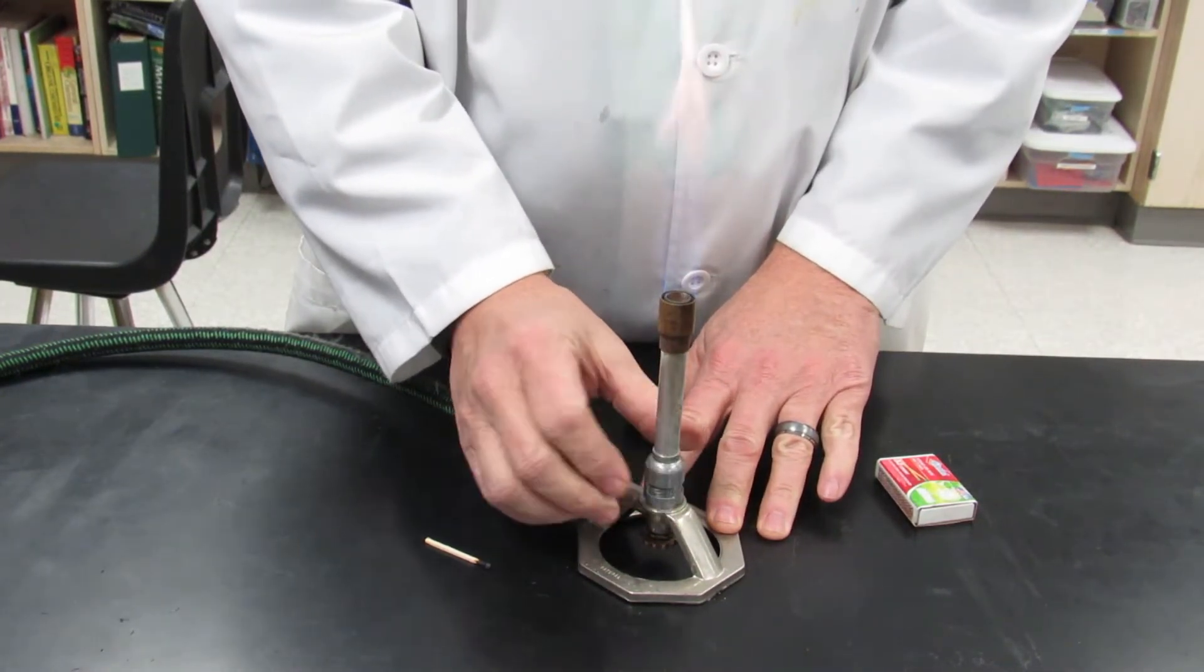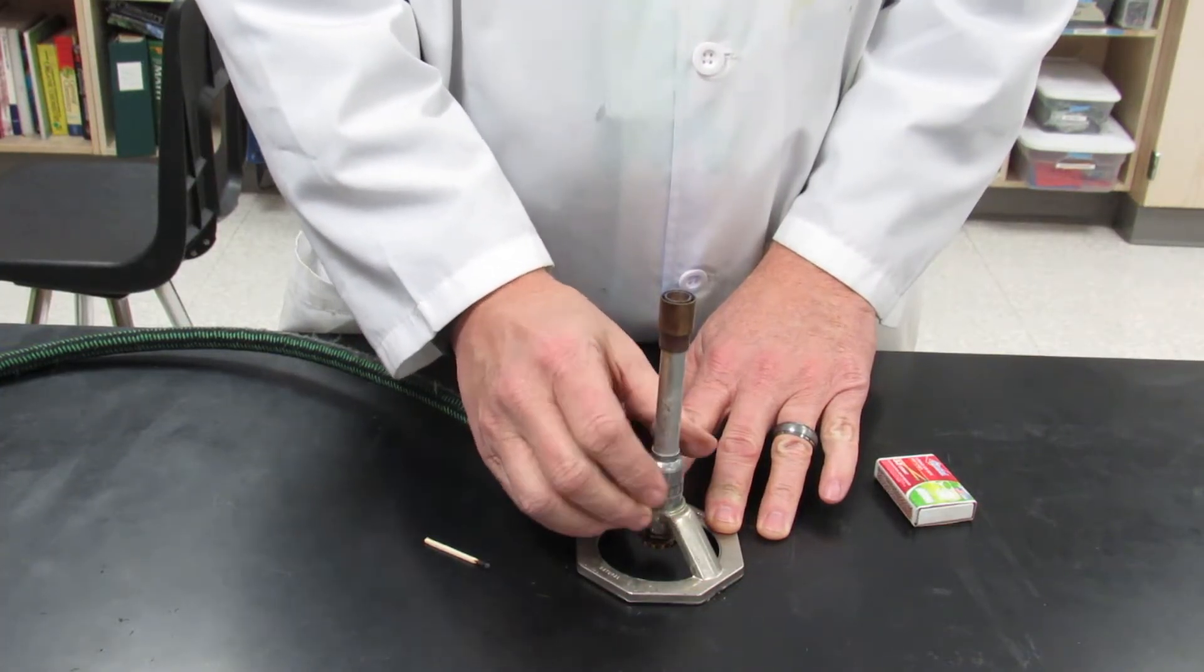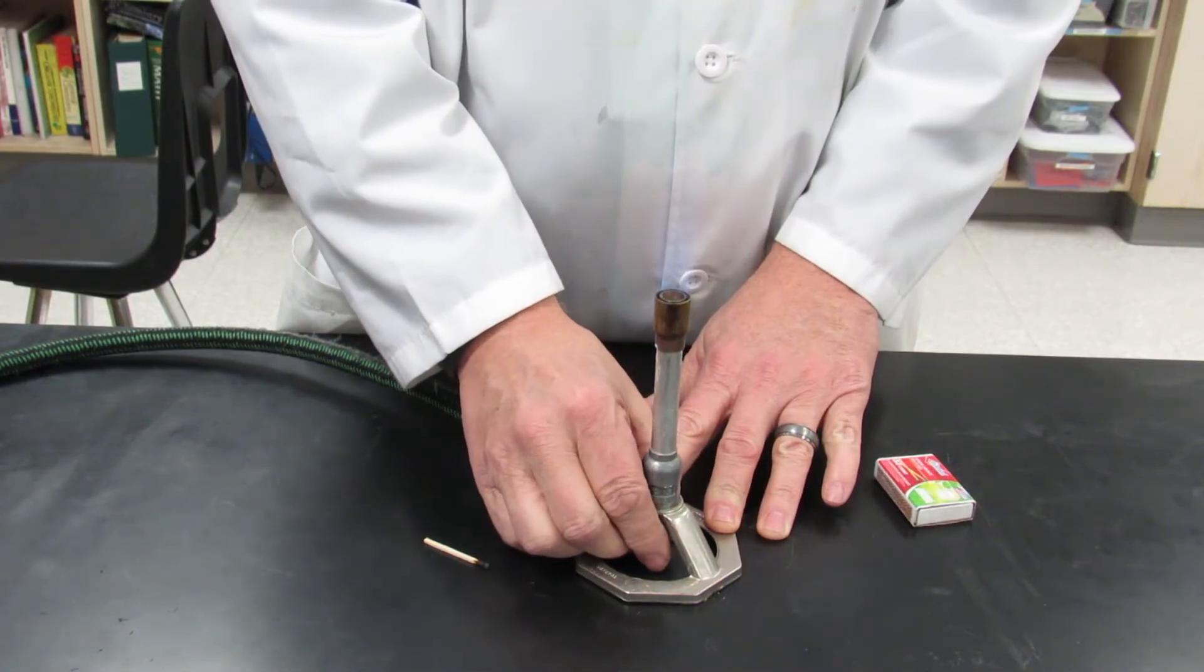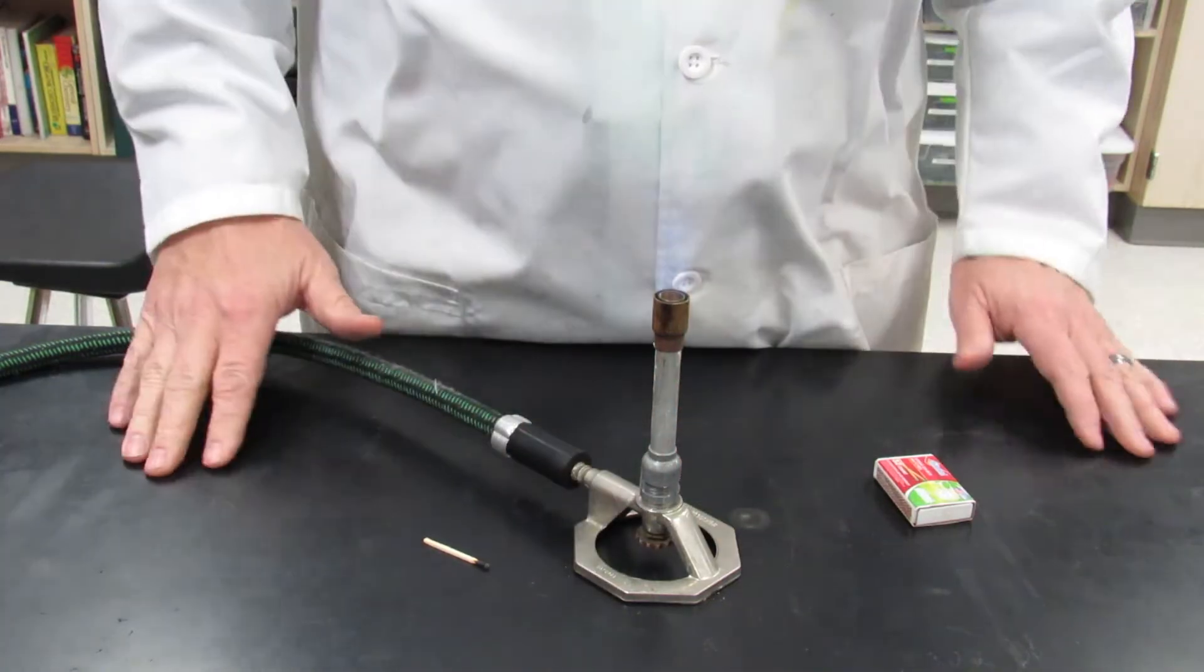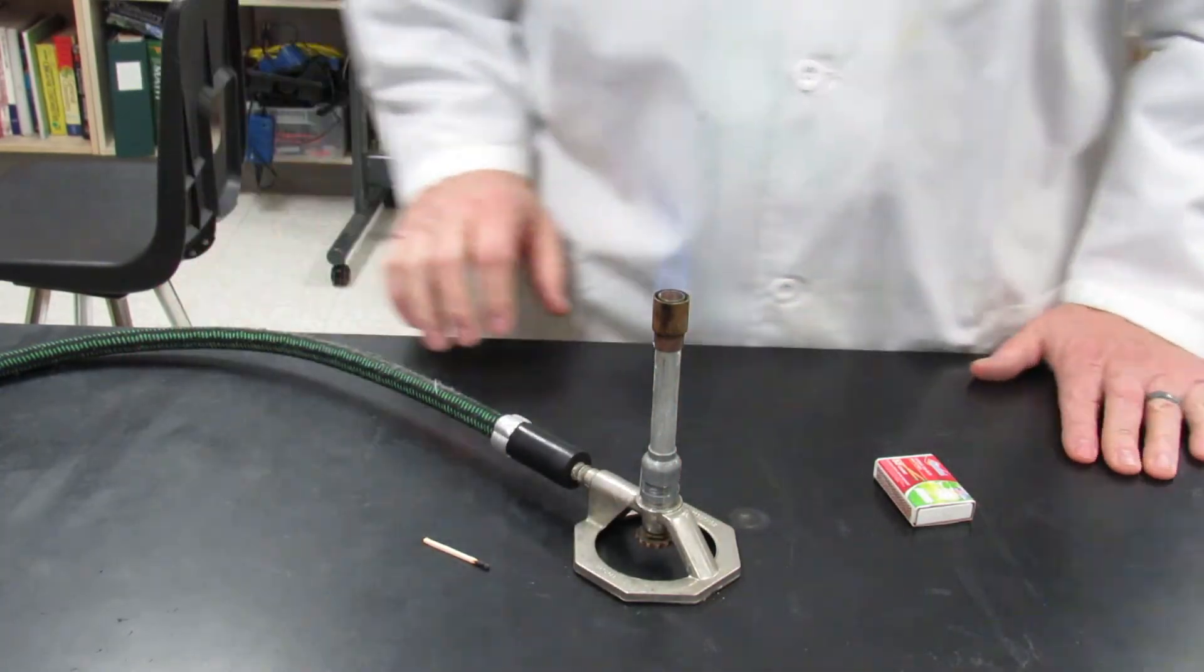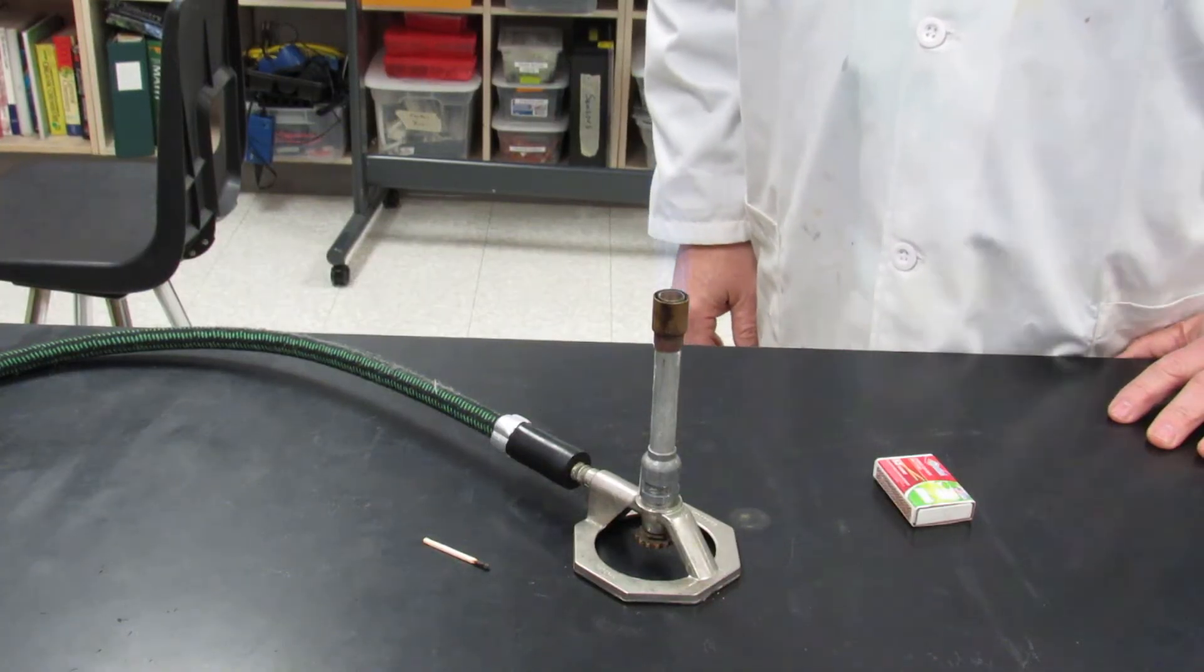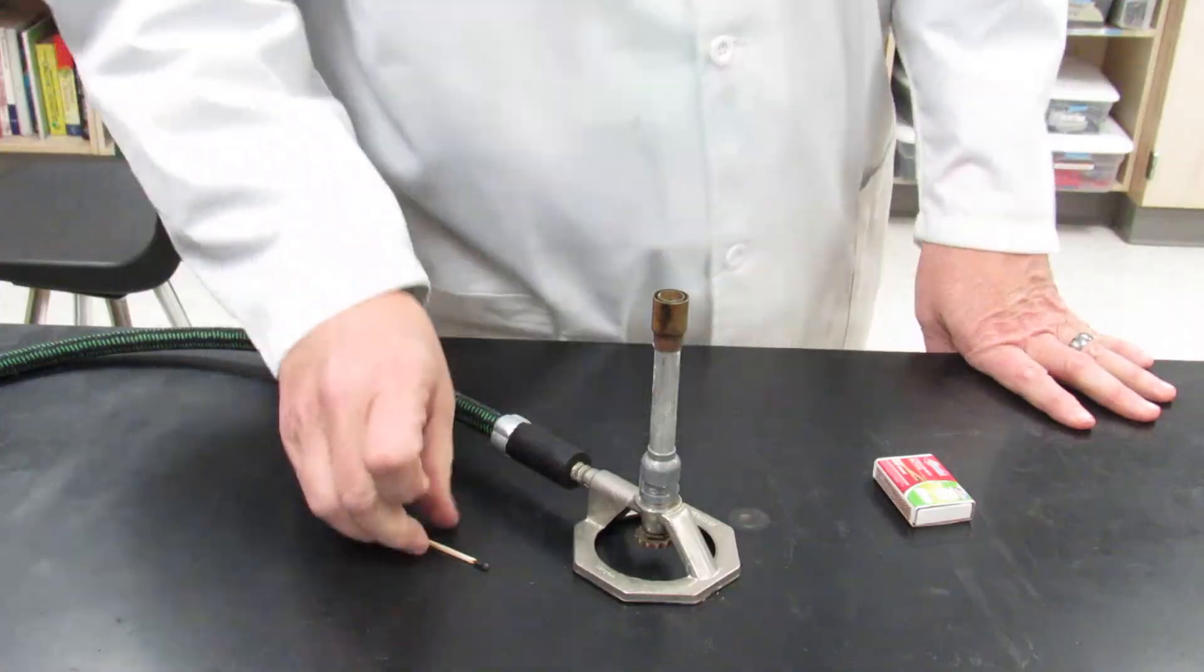Turn the barrel counterclockwise until you get a nice blue pointy flame. You may have to adjust the gas a little bit to turn it down or up to get a nice pointy blue flame. You can see it against the background—that is the way you need to light the Bunsen burner.